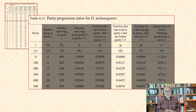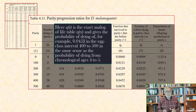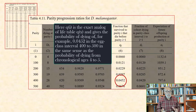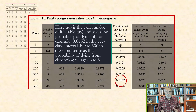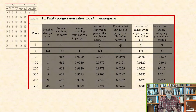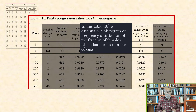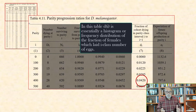Column 6 contains the fraction that survived to parity i that died before parity i plus 1. For example, 0.0452 of the cohort that survived to the 400 egg class died in the interval 400 to 500 eggs. Column 7 contains the fraction of the original cohort dying in parity class interval i to i plus 1. At parity 400, there were 0.0420 of the original 666 flies that died in the parity interval 400 to 500.